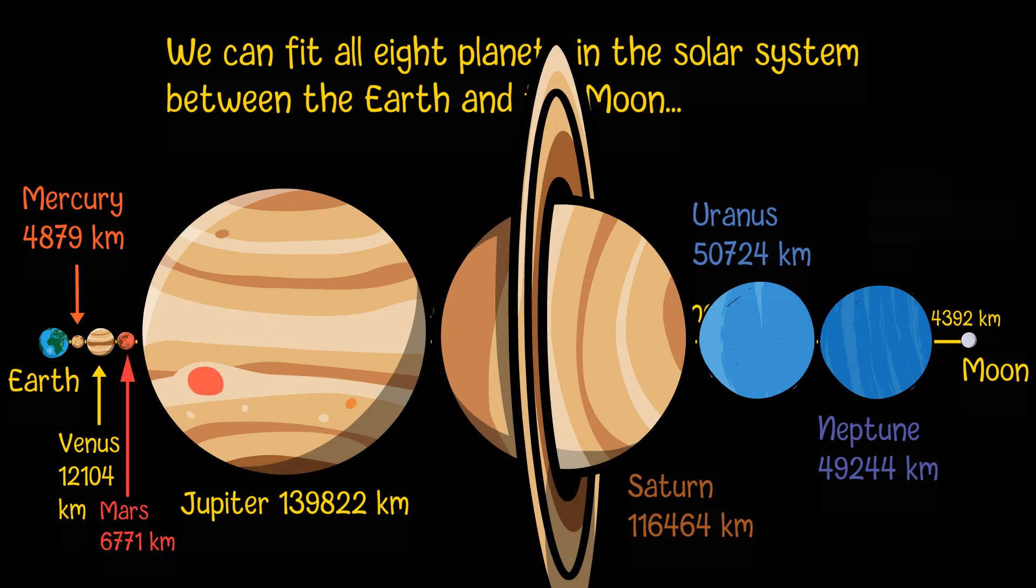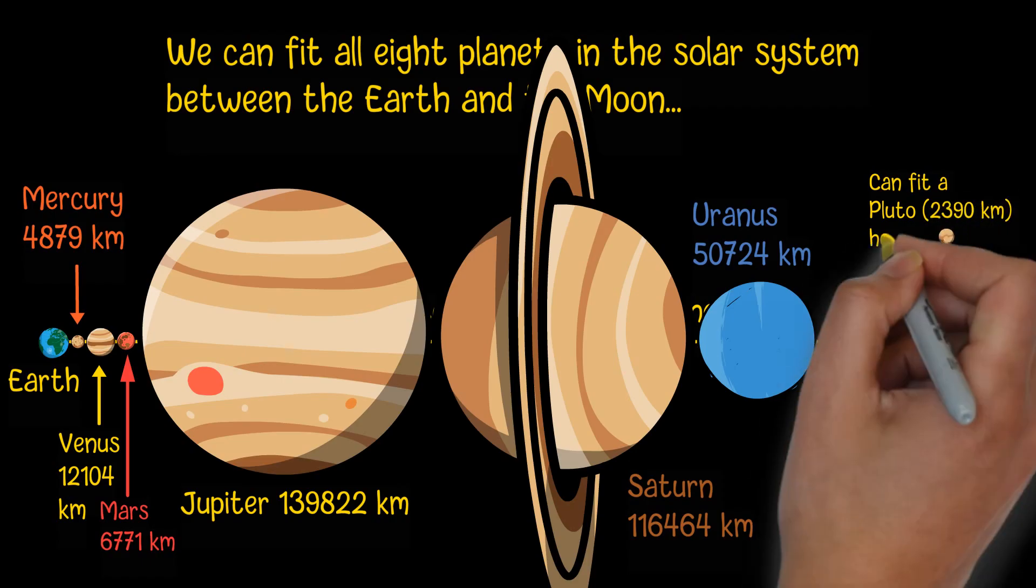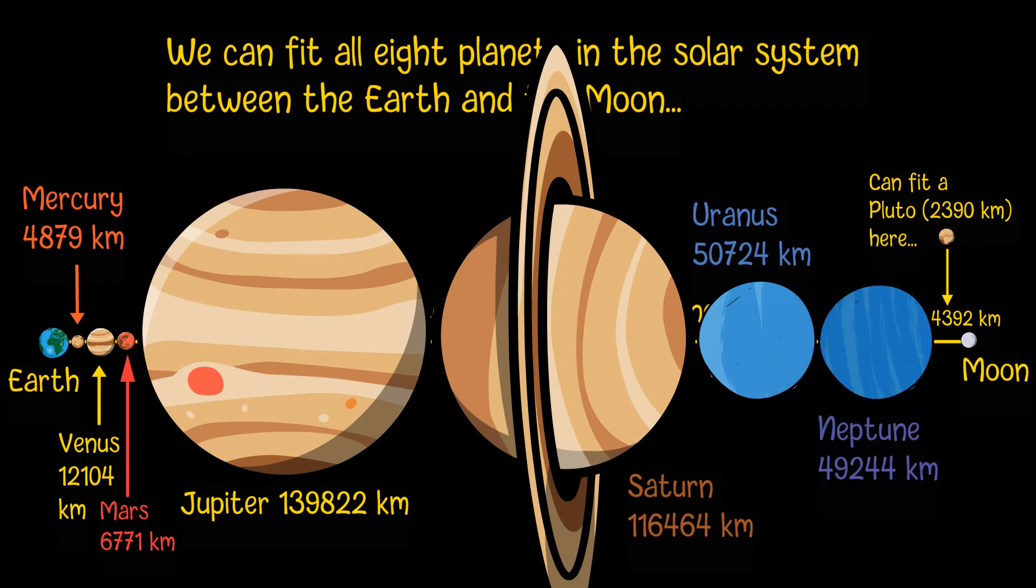If we use the old definition of planets where Pluto is also included, there would be room for Pluto in this gap, since its average diameter is only 2,390 kilometers.